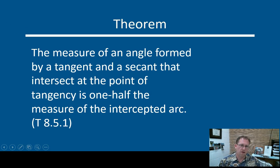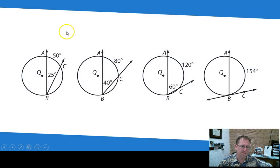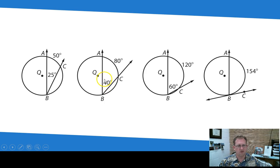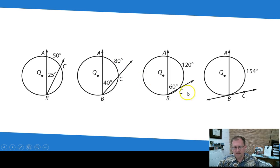Let me show you where this fits in the great big scheme of things. We've done inscribed angles and their intercepted arc. So 25 degrees would be the measure of this angle because it's 50 degrees of arc. This would be 40 degrees of angle because it's 80 degrees of arc. If you keep widening this — 60 degree angle and 120 degrees of arc — you can see that logically this flows.